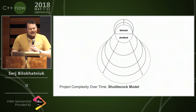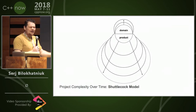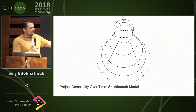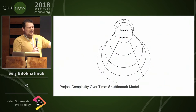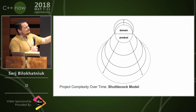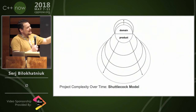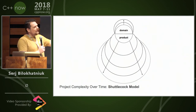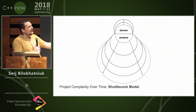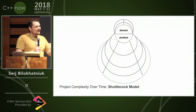But then I started writing code for money, and I thought — that's actually how it is now for most projects I've been on. I call it the shuttlecock model — it's a thing, look it up, and it's not what you think. What this implies is that the complexity of the product grows disproportionately faster than the complexity of the domain, so every little thing I offer the customer, I get tons of crud in my product instead. And that's just not healthy.